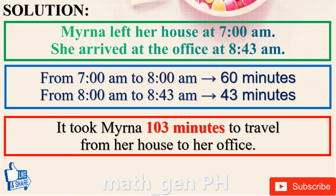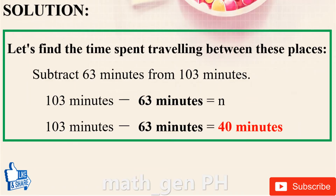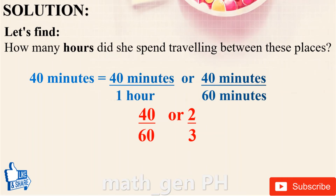It took Myrna 103 minutes from house to office. Time spent at stops: 15 plus 11 plus 37 equals 63 minutes. Traveling time: 103 minus 63 equals 40 minutes. Converting to hours: 40 minutes equals 40/60 equals two-thirds of an hour. Answer: two-thirds hour.